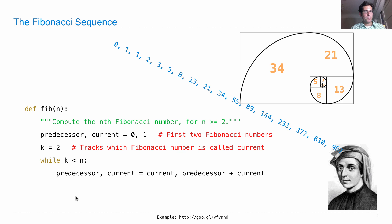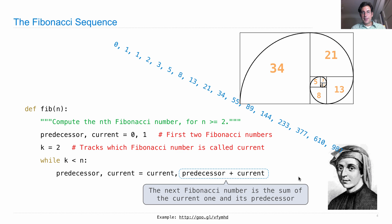Now remember the execution rule for an assignment statement: we evaluate everything on the right side before rebinding any names to the left. So we figure out what the current Fibonacci number is, we sum together the predecessor and the current to get the next one. And then predecessor and current as names will be bound to the next two elements in the sequence. This equation is what's actually computing the next Fibonacci number. We'll also update k, and then when we're finished with that process, we return current.